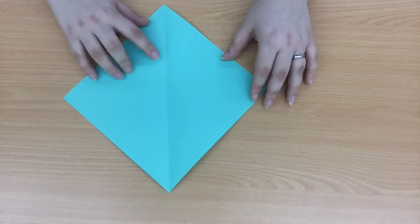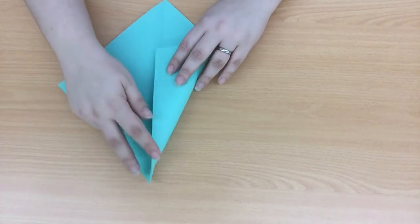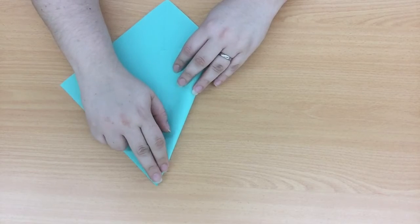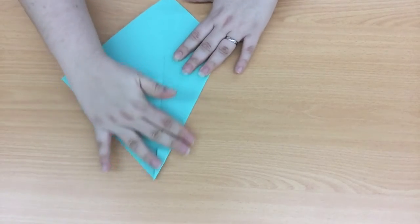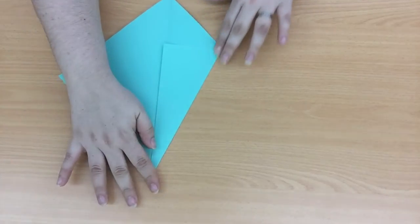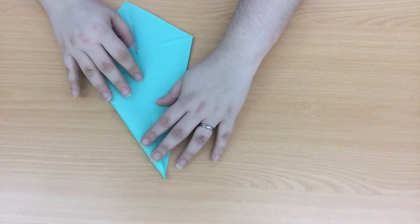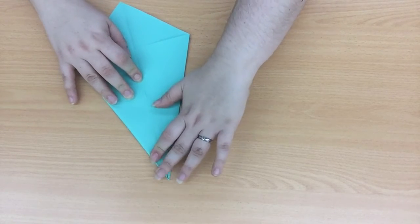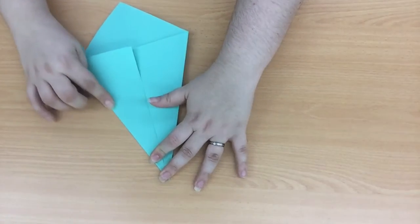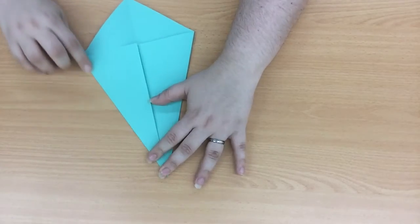Using your center fold as a guide, fold in one corner so that it's touching the center line. Make sure you give it a nice good crease. Now fold in the other side so that it makes a kite shape. Once again make sure you give it a nice firm crease.